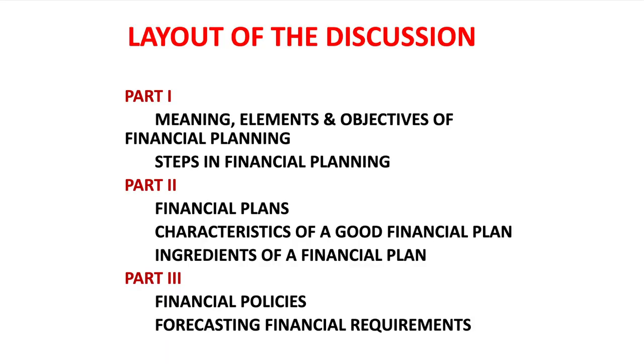This discussion will be covered in three parts. Part one will discuss the meaning, elements and objectives of financial planning, and steps in financial planning. Part two will discuss financial plans, characteristics of a good financial plan, and ingredients of a financial plan. Part three will discuss financial policies and forecasting financial requirements. First of all, part one: meaning of financial planning.